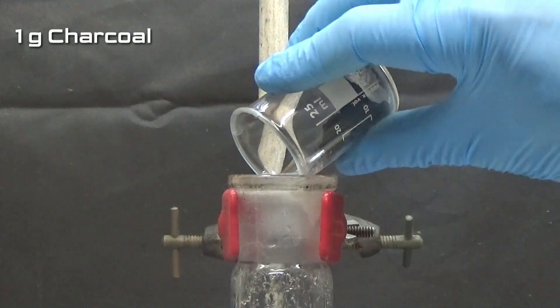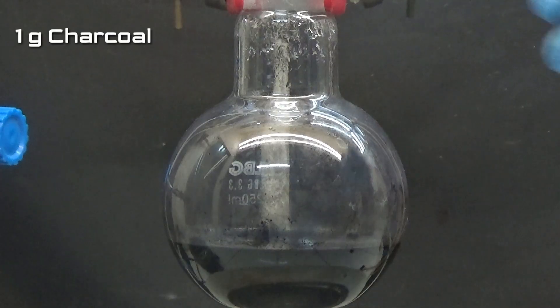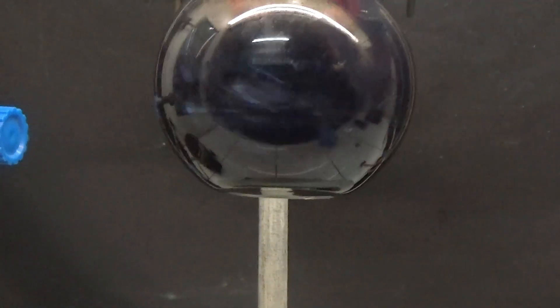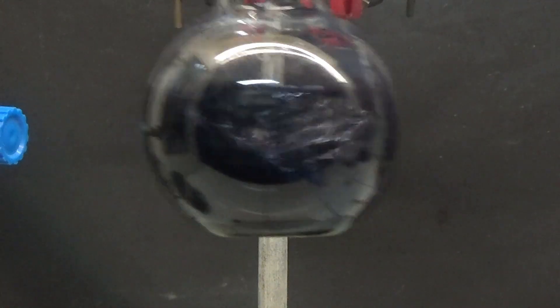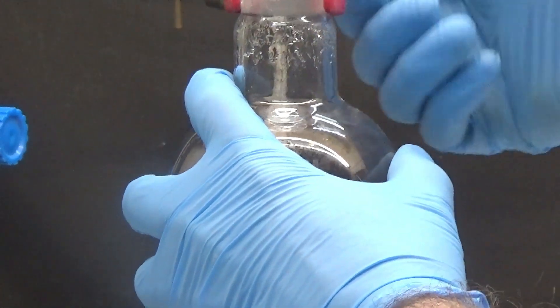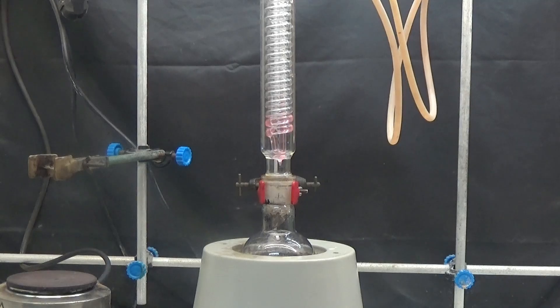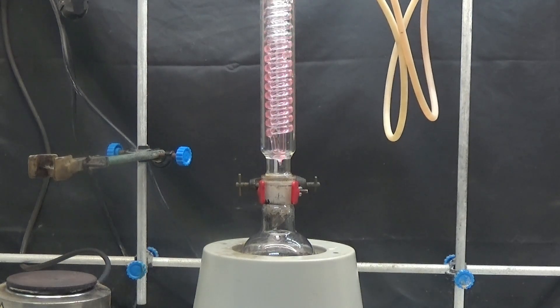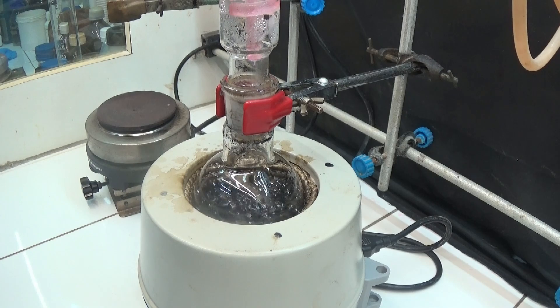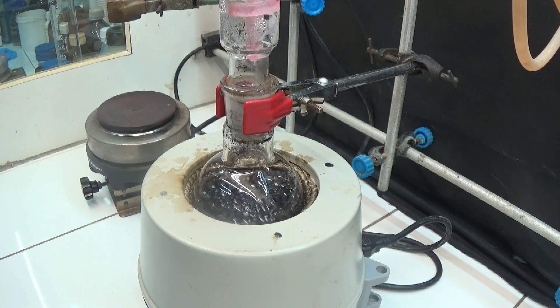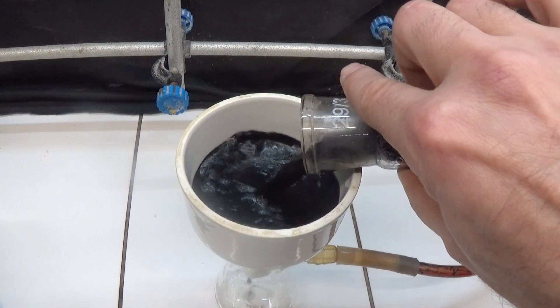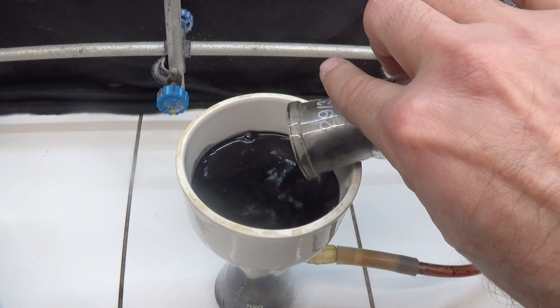To the product remaining in the flask we add 1 gram of charcoal and it is heated to reflux for 20 minutes. We filter the result through a Buchner funnel with filter paper.